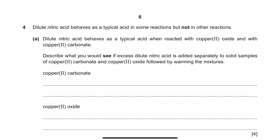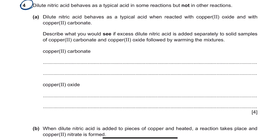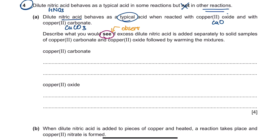This is the question from October/November 2016 Question 4. Dilute nitric acid behaves as a typical acid in some reactions but not in others. Question A: dilute nitric acid behaves as a typical acid when reacted with copper oxide and copper carbonate. Describe what you would see if excess dilute nitric acid is added separately to solid samples of each by warming the mixtures. Whenever they ask you to describe what you see, they want the observation. The first thing you need to do is always write down your chemical equation for the reaction taking place.